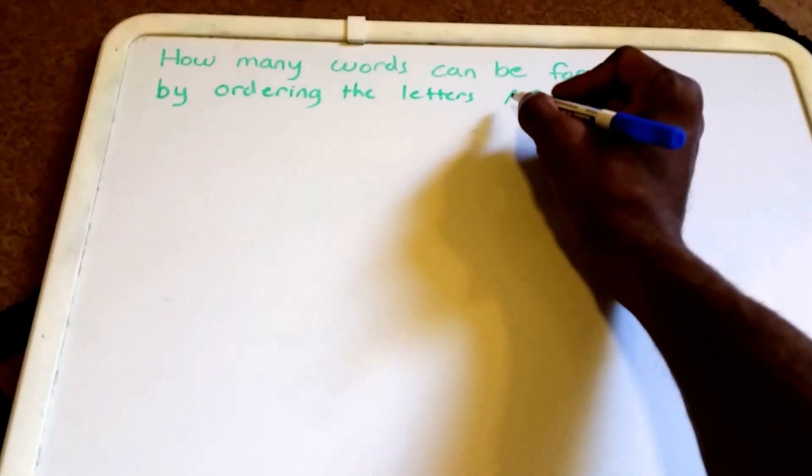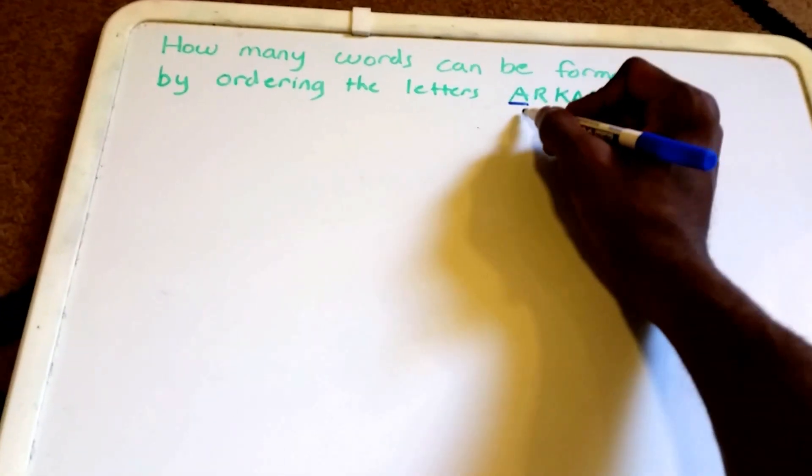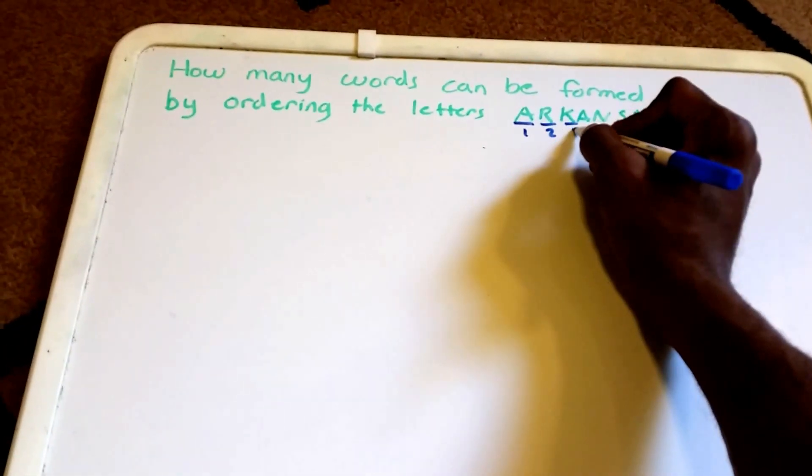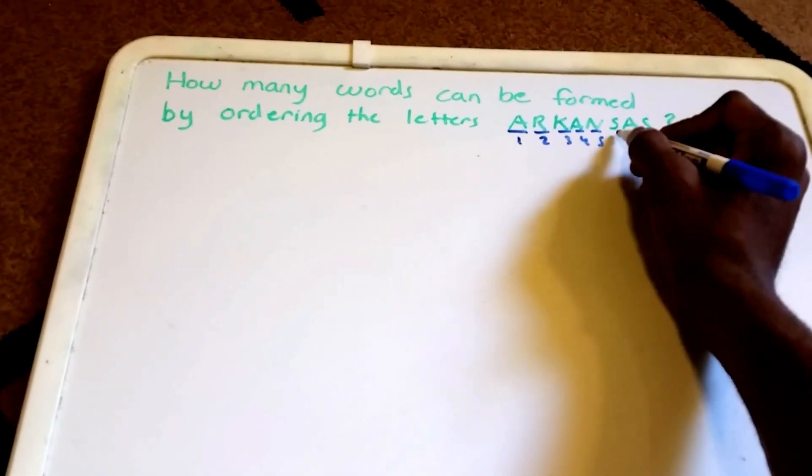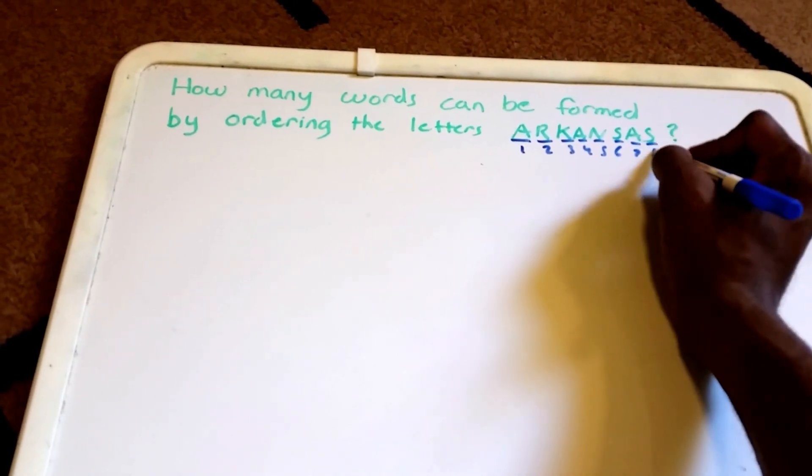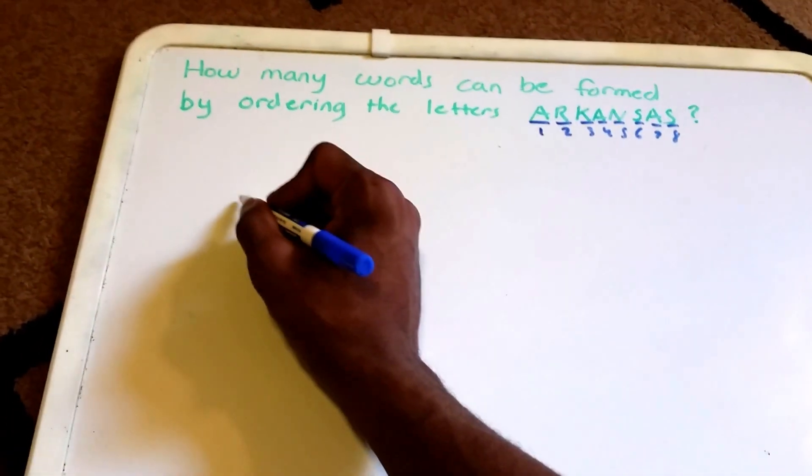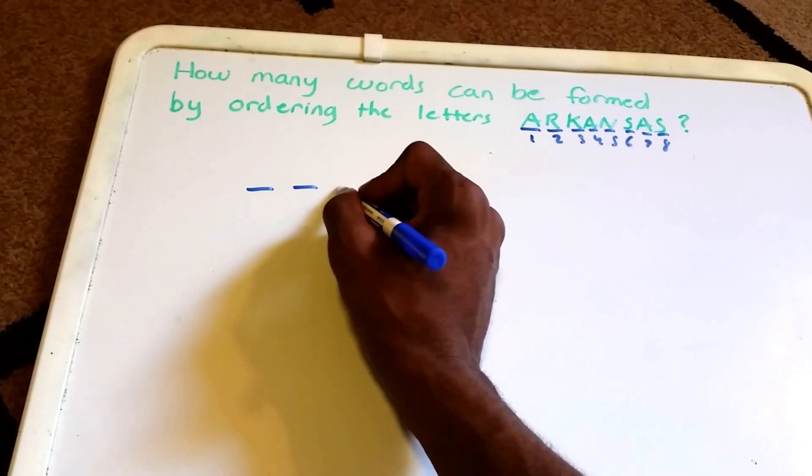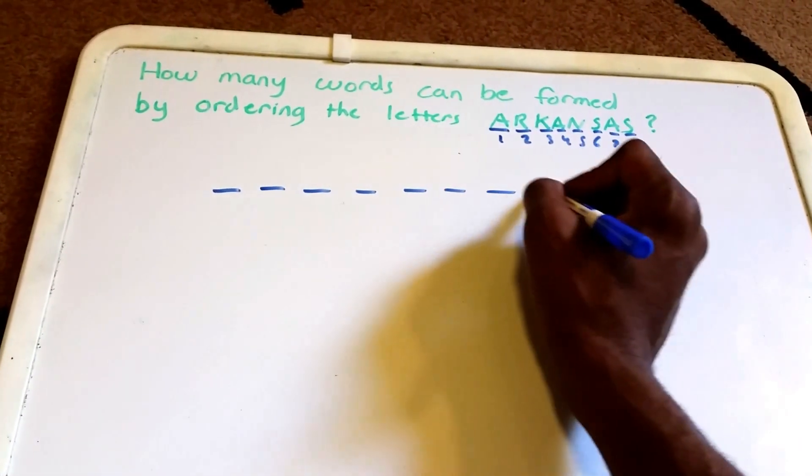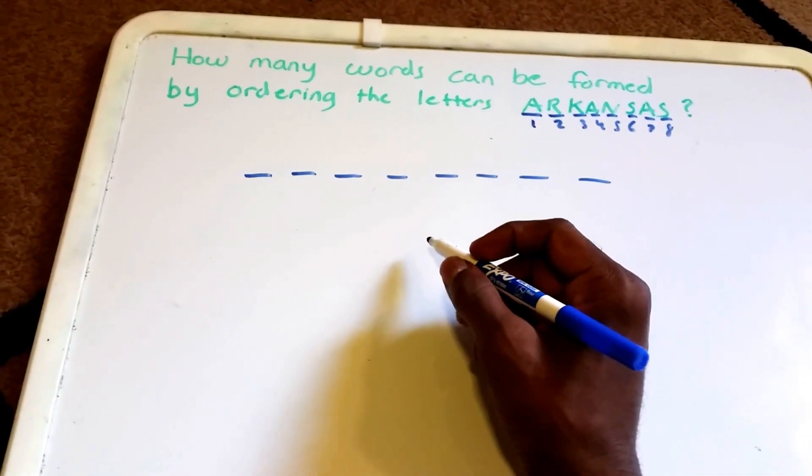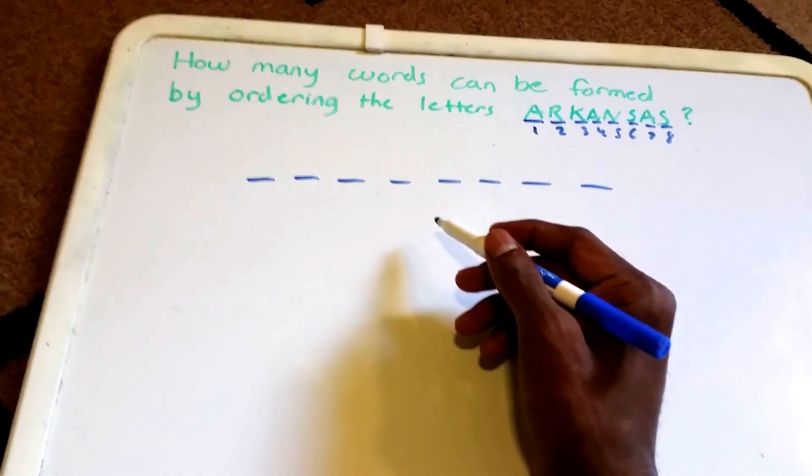The first thing we need to do to get started is count how many letters we have in total, or spots, which would be 1, 2, 3, 4, 5, 6, 7, 8 different spots. So I'm going to rewrite that here: 1, 2, 3, 4, 5, 6, 7, 8. We have 8 different spots.